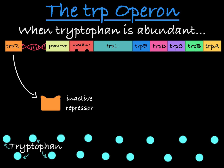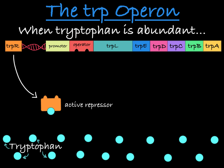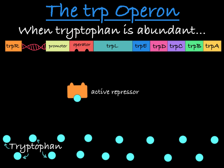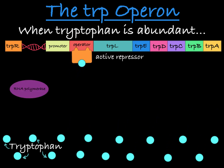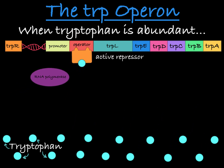When there is an abundance of tryptophan, the cell doesn't need to make more. In this state, the tryptophan will act as a co-repressor, binding to the repressor and causing it to become active. The repressor will then bind to the operator and prevent RNA polymerase from transcribing the trp structural genes.